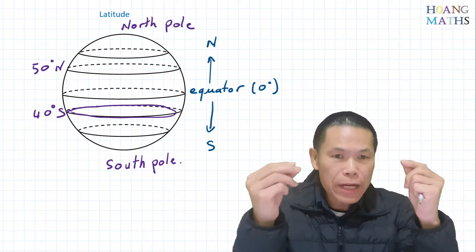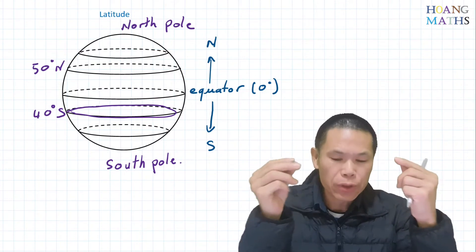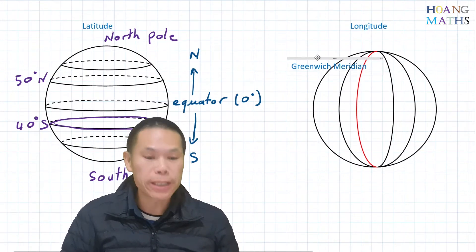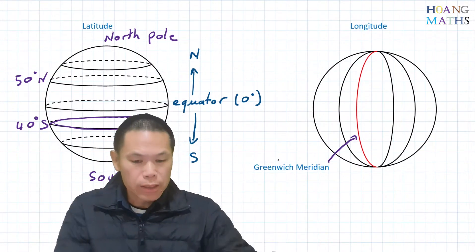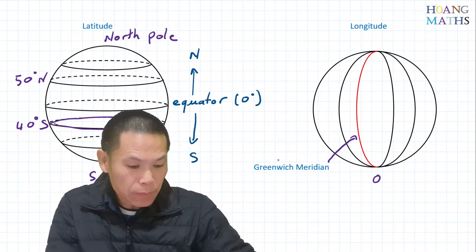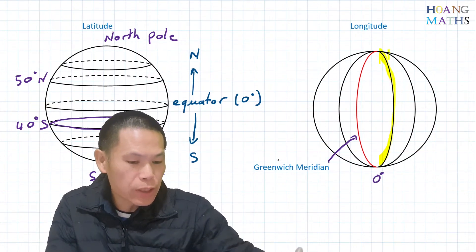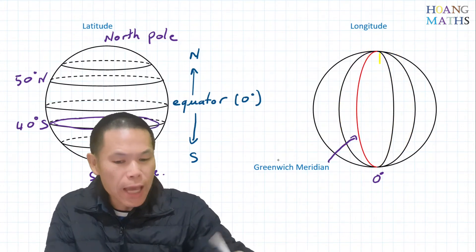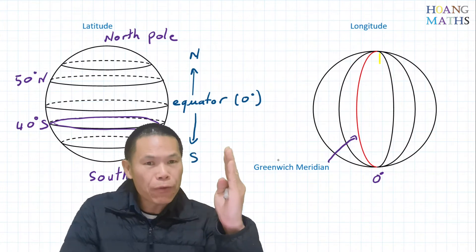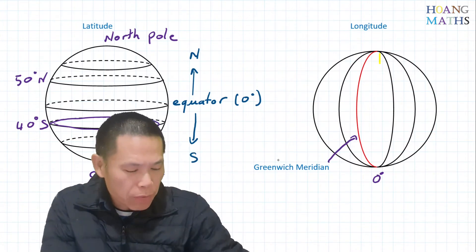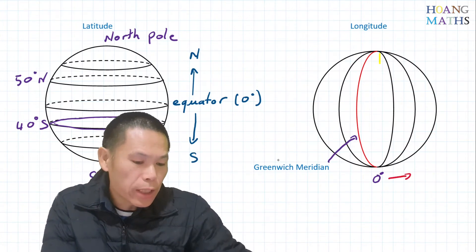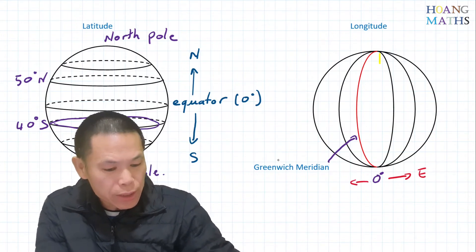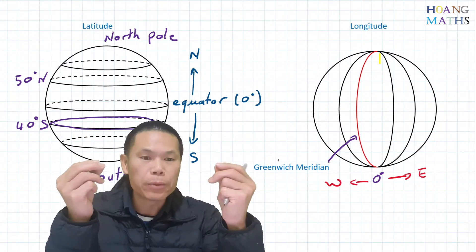Apart from latitude, we also have longitude. This red line here is called the Greenwich meridian and it starts at zero degrees. If the longitude is on the right of the Greenwich meridian, that means it is east. On the left hand side of the Greenwich meridian is west — please keep that in mind.